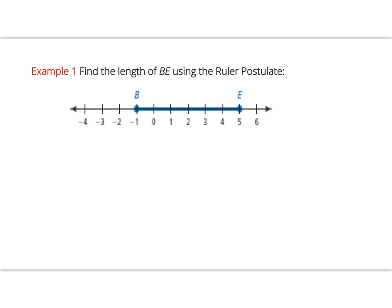Let's take a look at example one. Find the length of BE using the ruler postulate. So let's start by assigning the variables x1 and x2 to the locations for B and E. And then we know to get the distance, it's got to be positive, so we want the absolute value of x2's location minus x1's location. So by substitution, I can say 5 minus negative 1. Simplify inside your grouping symbols, so 5 plus 1, resulting in 6.